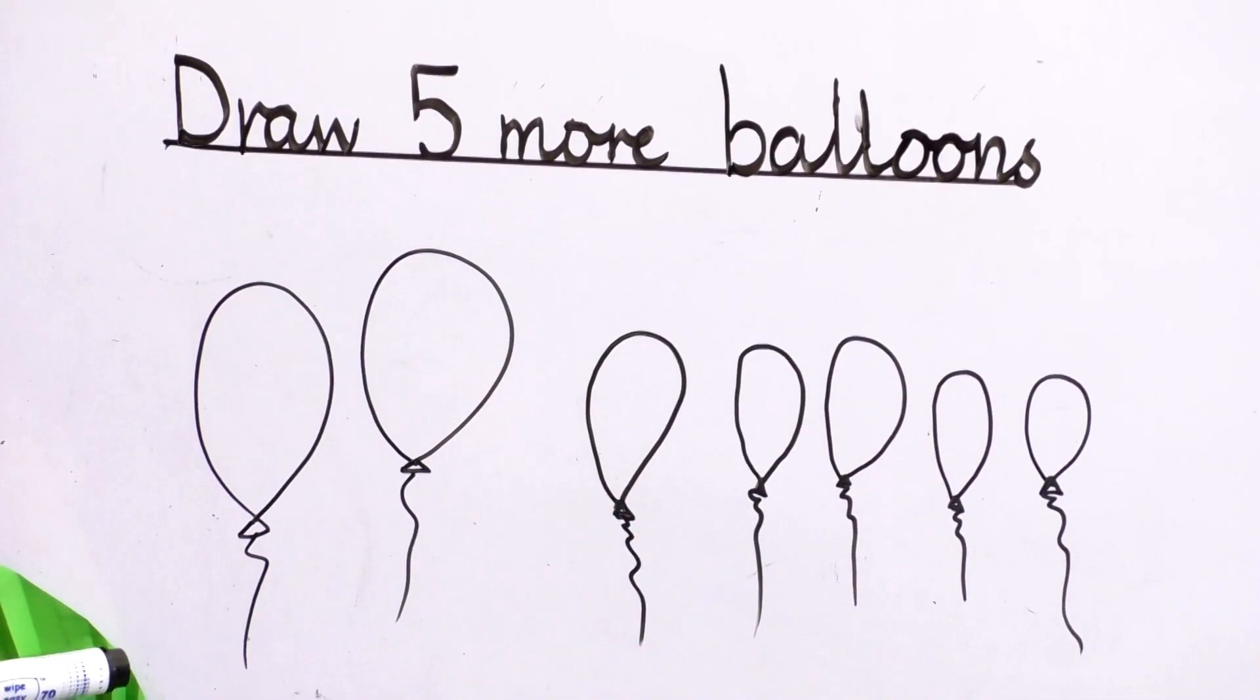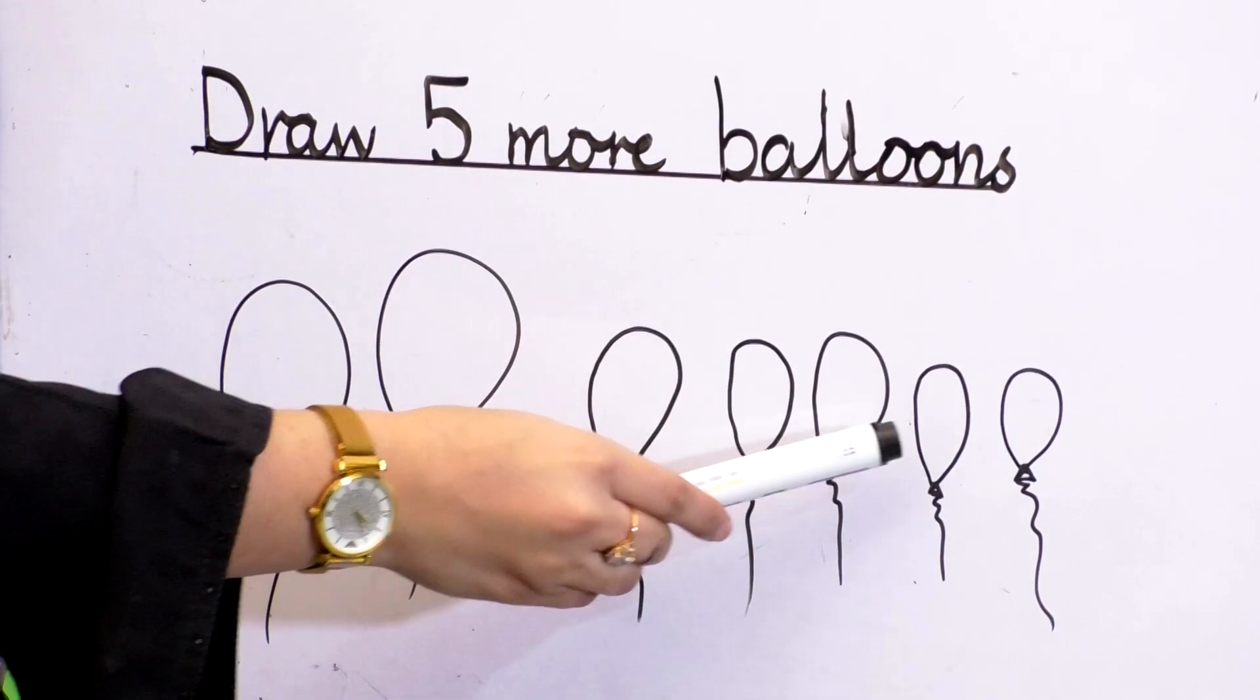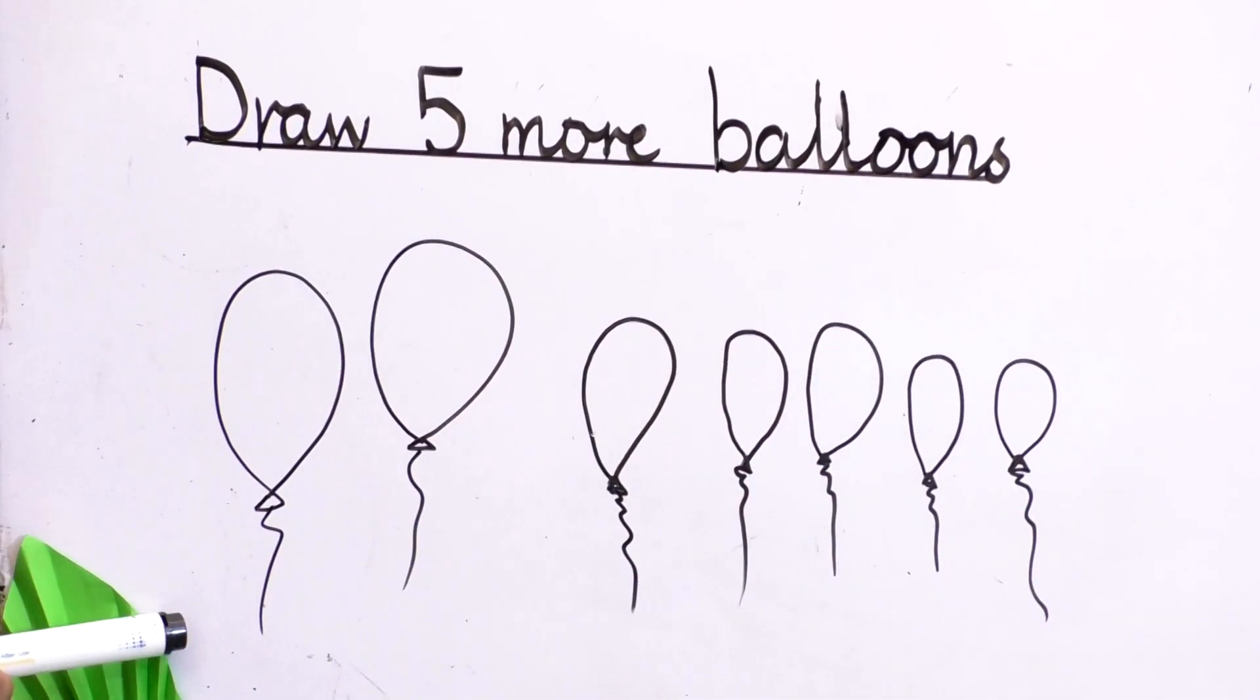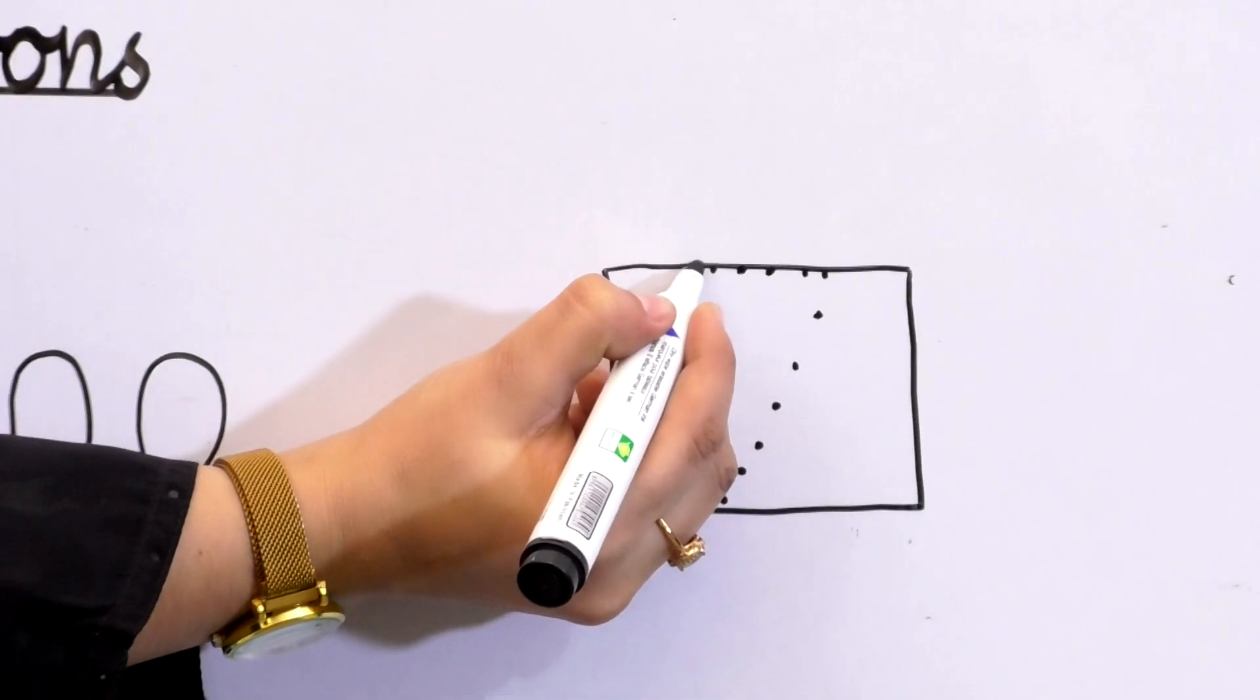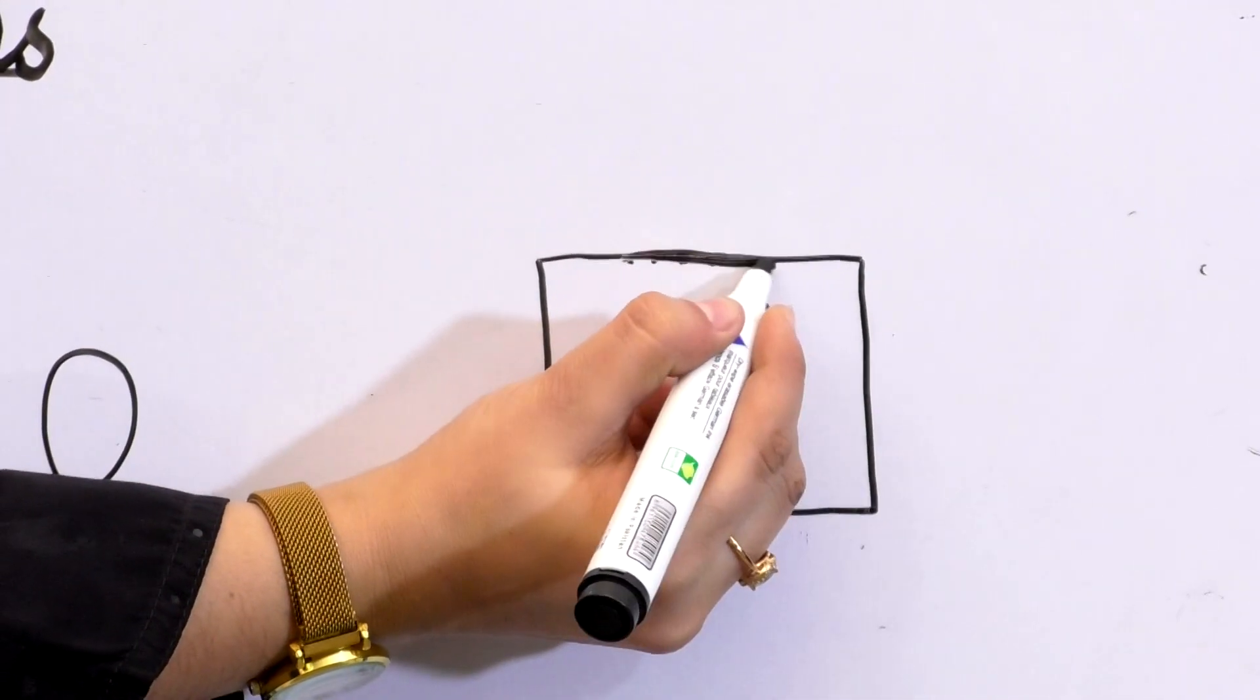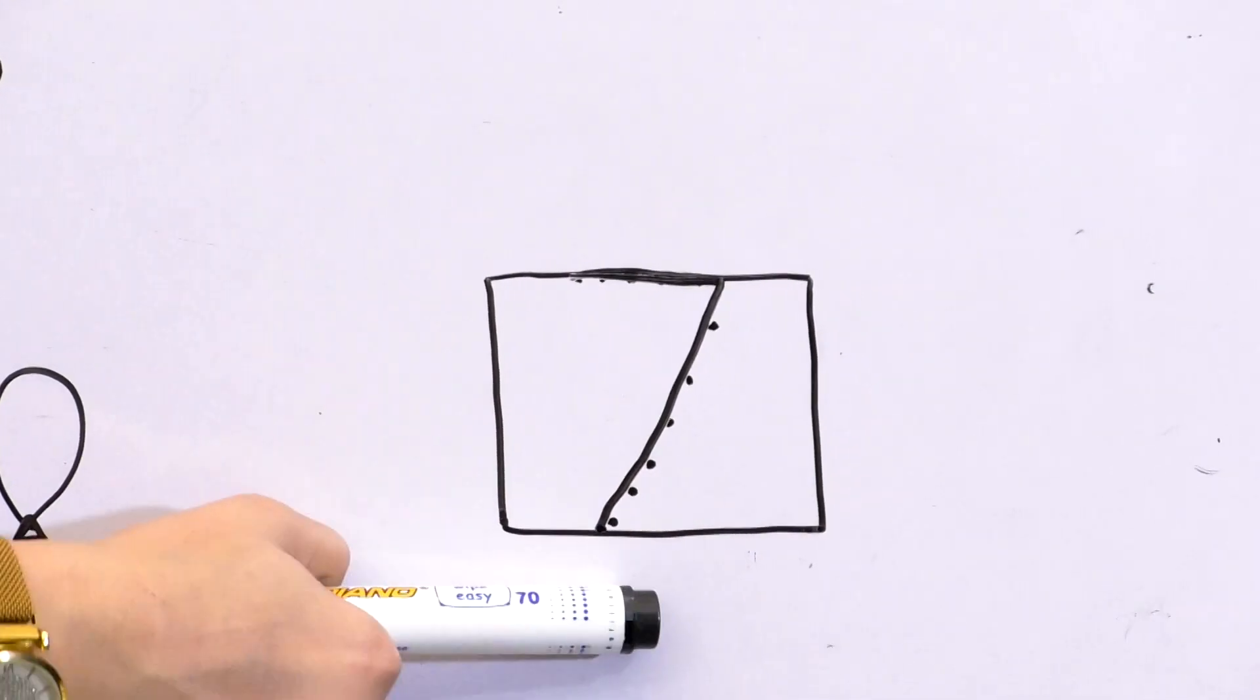Let's count how many balloons here: one, two, three, four, five, six, seven. We have seven balloons here. Let's write in the box. Start from the top and make a sleeping line, then a standing line to the left side. It's number seven.